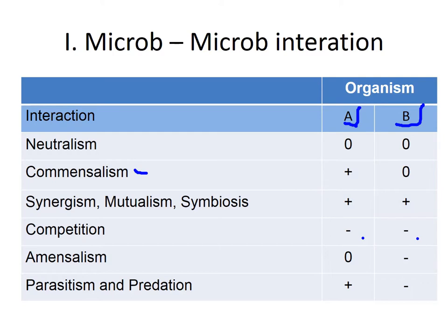When we talk about amensalism, there is a neutral side for organism A but a negative side for organism B. If A is present, B is negatively affected by A's presence. The final microbe-microbe interaction type is parasitism and predation.